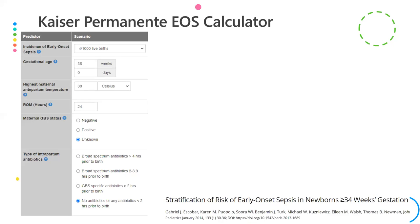They developed a calculator for early-onset sepsis evaluation, objectifying findings from maternal history. Rather than broad risk factors, they used two specific maternal findings: maternal temperature and duration of rupture of membranes. This calculator is specific for late-preterm and term babies, incorporating the unit's baseline sepsis incidence, maternal GBS status, and intrapartum antibiotic use.